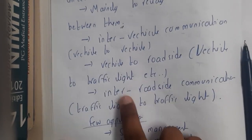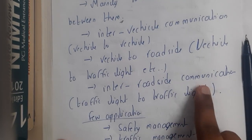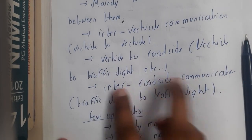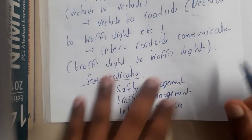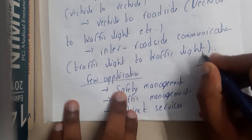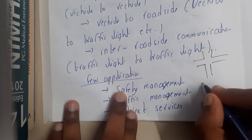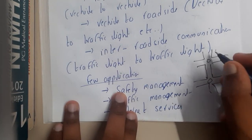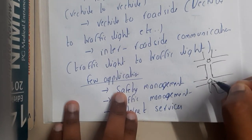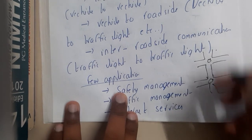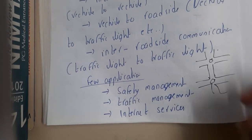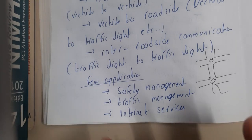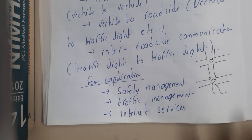There is also inter-road communication — traffic light to traffic light. For example, if there is a junction here and another junction ahead, when this signal is red, the other signal should also be red. So the signals can communicate with each other. All these concepts come under Vehicular Ad Hoc Networks.